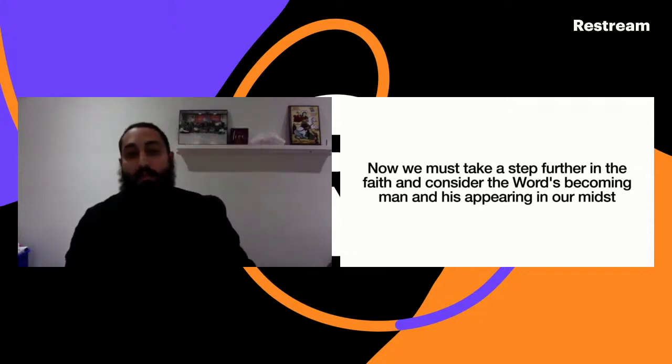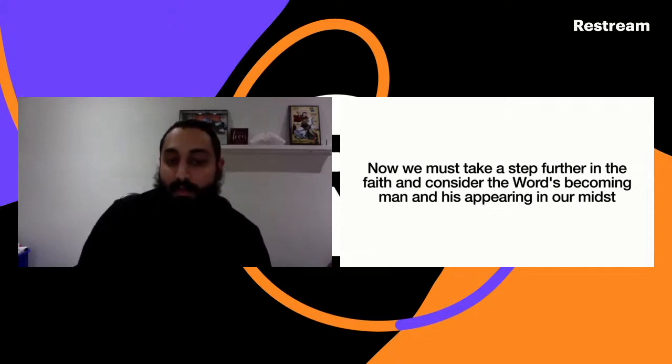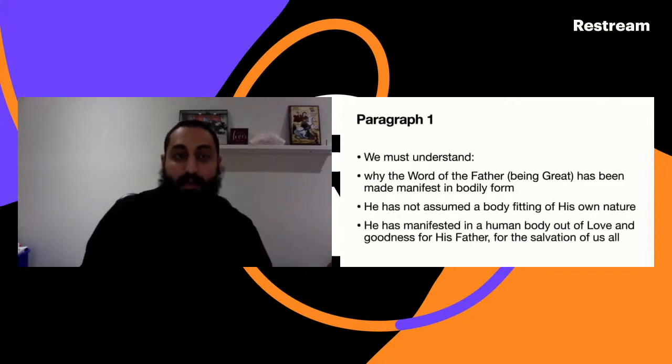The point of this book is understanding why the Word had to become man - the Word here, capital W, is God, the Logos. Why did God have to become man? Why did He have to appear and take a body and to be born on earth?